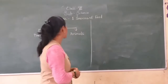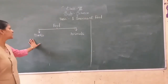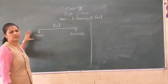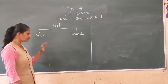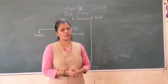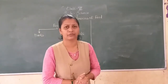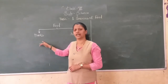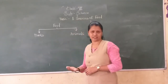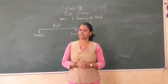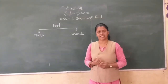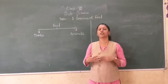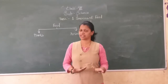In today's video we are going to learn the sources of food — from where we get it. That is from plants and animals. Mostly we get food from green plants. What things we get from plants: cereals, pulses, vegetables, fruits, oil, spices.